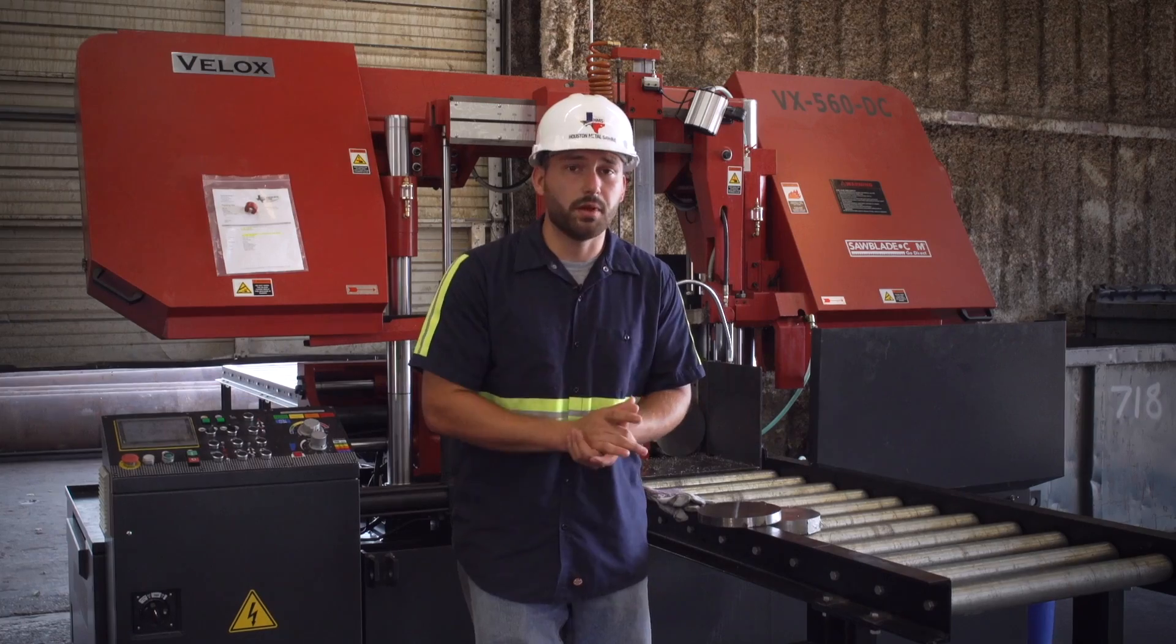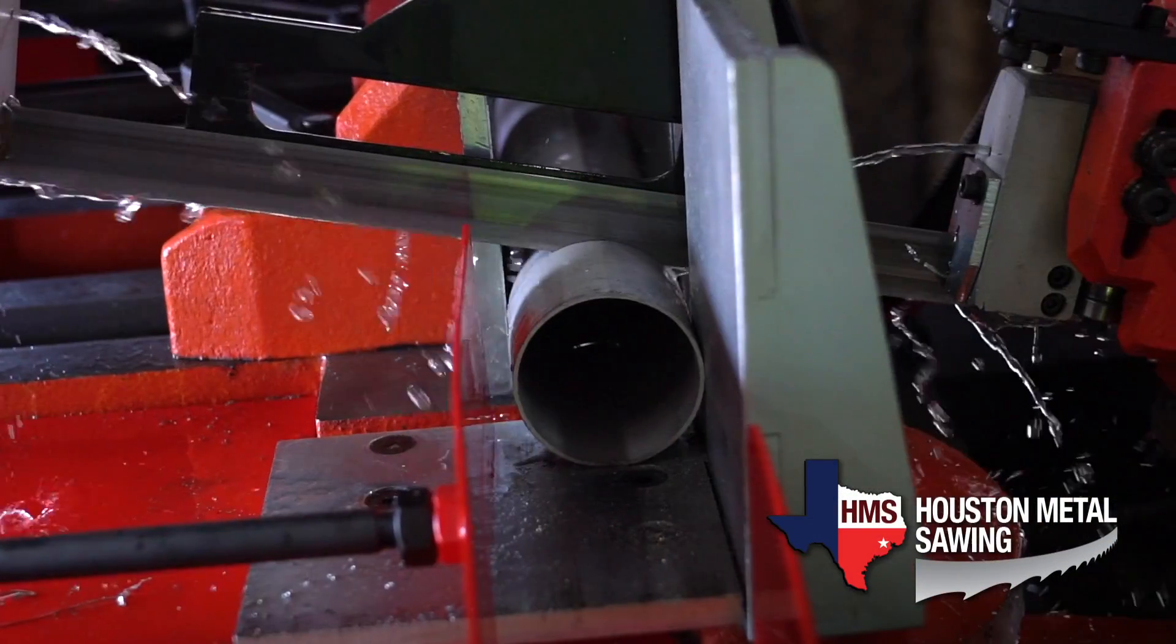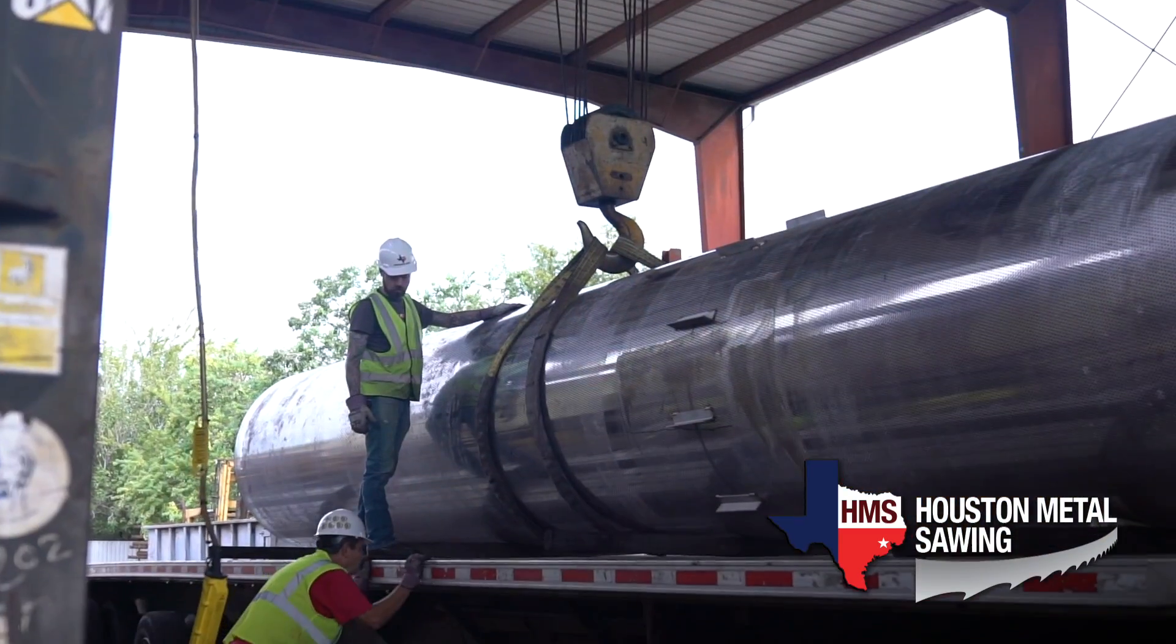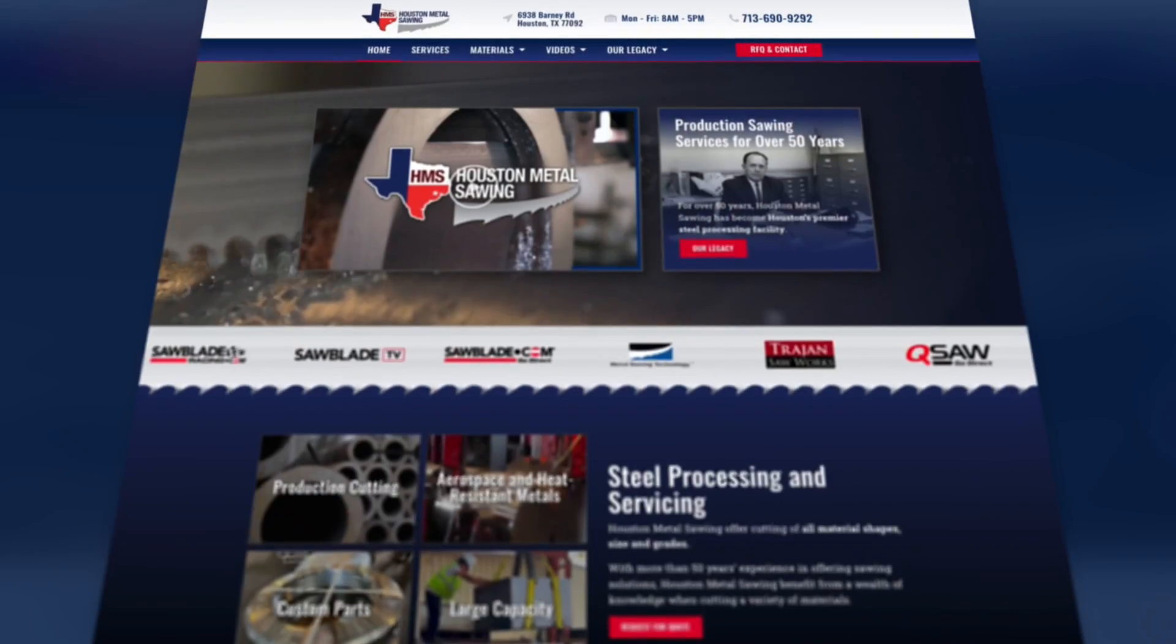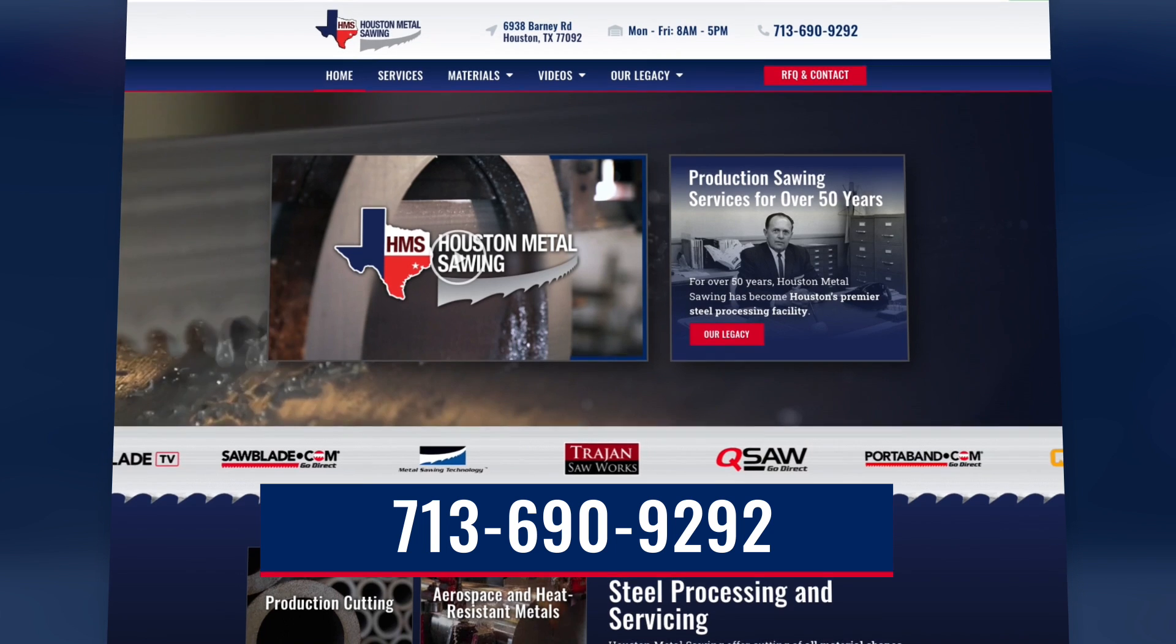HoustonMetalSawing.com is Houston's premier metal sawing facility with a very large capacity. We have everything from three-eighths all the way to five foot cut capacities and we service everything with our 25 ton crane. So whether it's something small or exotic, reach out to HoustonMetalSawing.com and request a quote and see how we can be your competitive advantage.